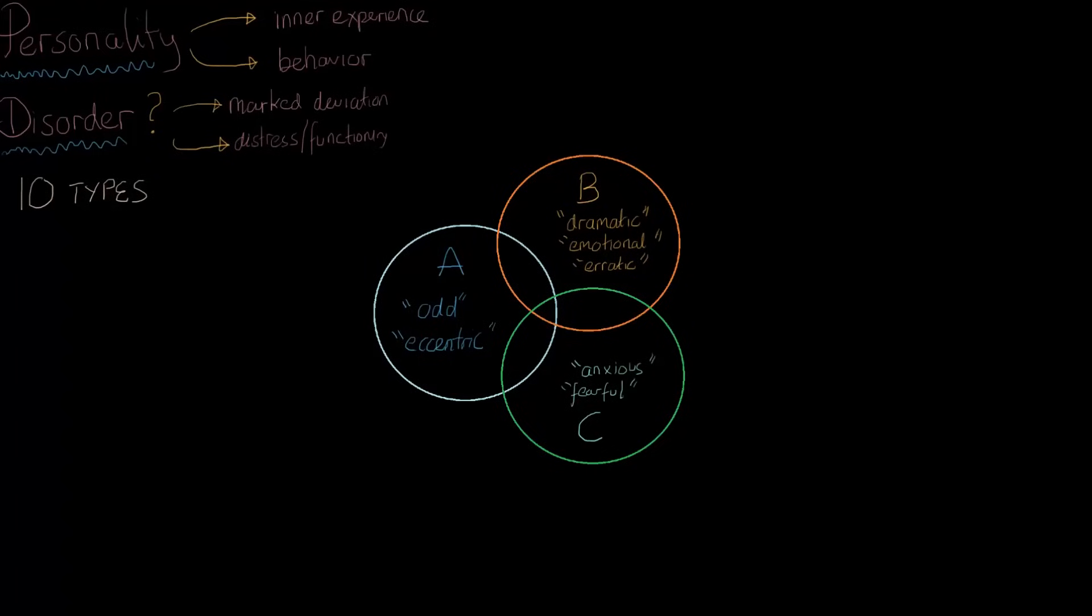One of the things you may have noticed is that there's a fair degree of overlap between these clusters. It may very well be that even though there's 10 different types of personality disorders, an individual may have one or more types. So let's start with A. In our A category, we have three different personality disorders.